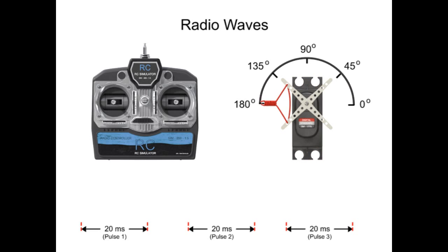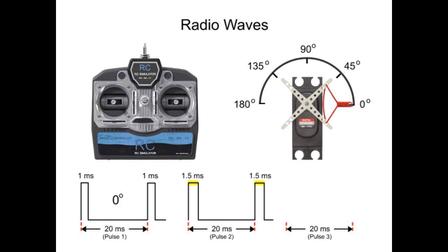For example, if the pulse is high for 1 millisecond, then the servo horn position can be programmed to be at 0 degrees. If it is 1.5 milliseconds, it is set to the center or 90 degree position. If the pulse signal is 2 milliseconds, then it can be instructed to go to the 180 degree position.